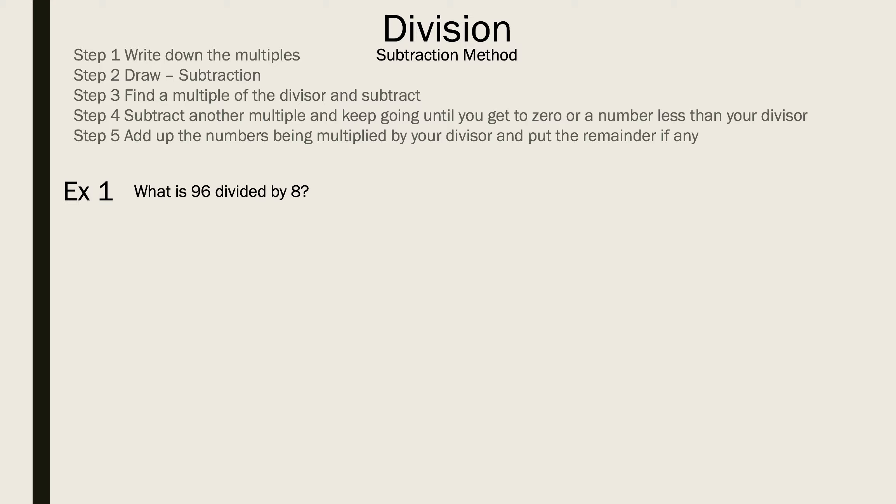Let's follow example one. What is 96 divided by 8? First thing we need to write down the multiples of 8, which is your divisor. Now we're going to draw your subtraction lines. Now you pick a multiple that you know and keep going until you reach zero. I think the easiest one for me to pick would be 8 times 10, which is 80. We subtract and we get 16.